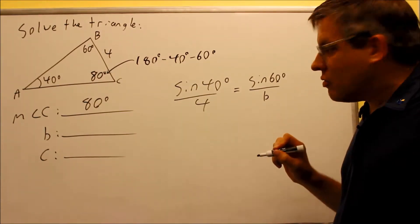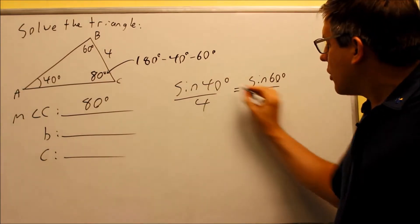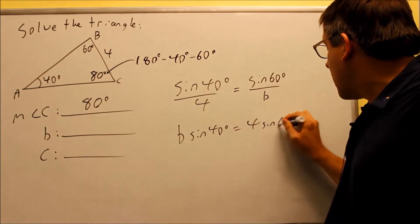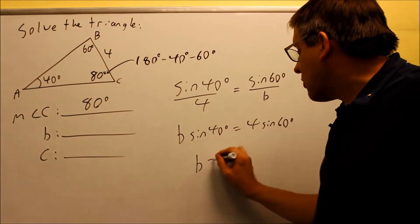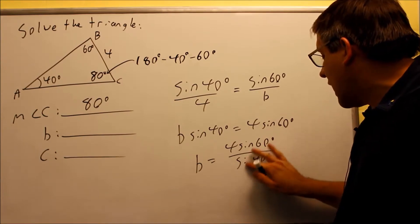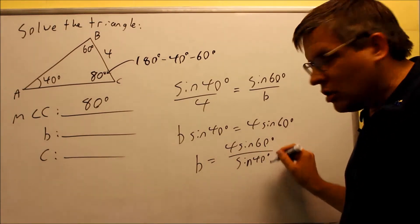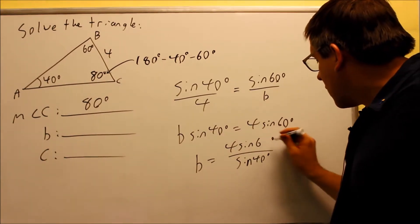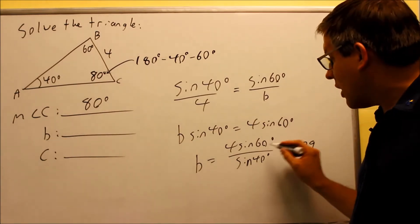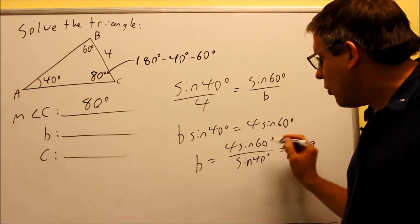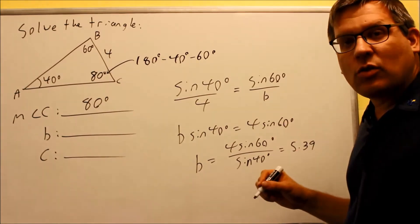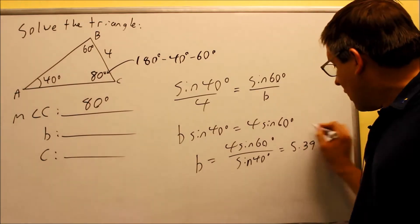Now we solve for B by cross multiplying: B times sine 40 degrees equals 4 times sine 60 degrees. Dividing both sides by sine 40 gives us 4 sine 60 divided by sine 40. Make sure your calculator is in degree mode. When you compute this, you get 5.39. Note that even though sine 60 has an exact table value, sine 40 does not, so you'll get a decimal either way.